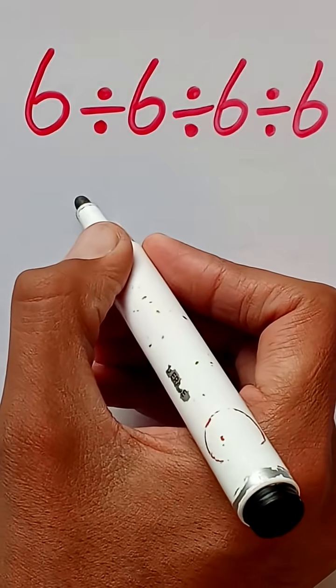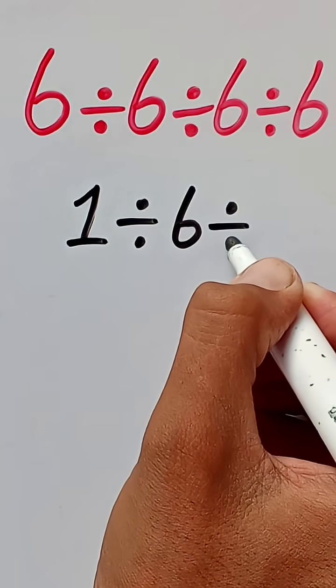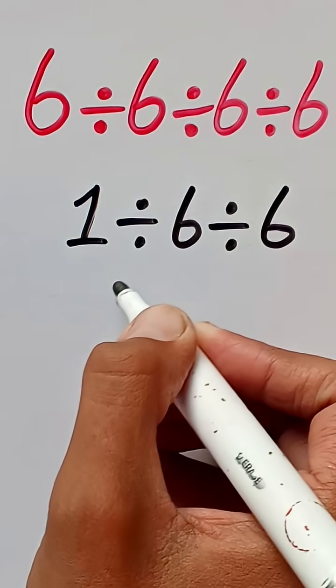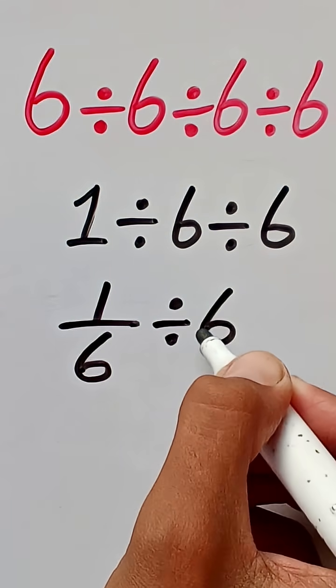6 divided by 6 equals 1, divided by 6 divided by 6. 1 divided by 6 divided by 6 we can write as one-sixth divided by 6.